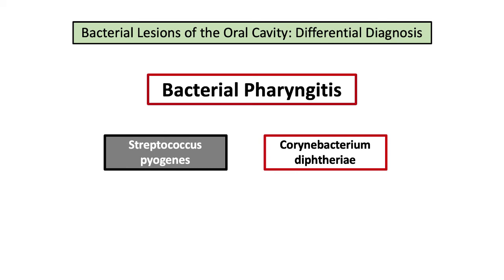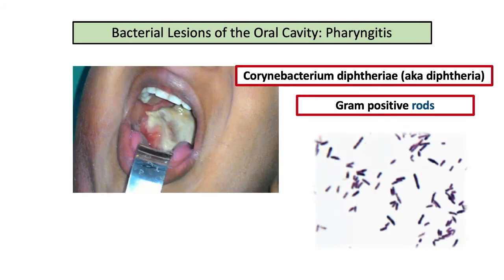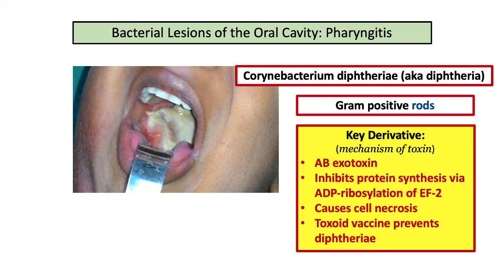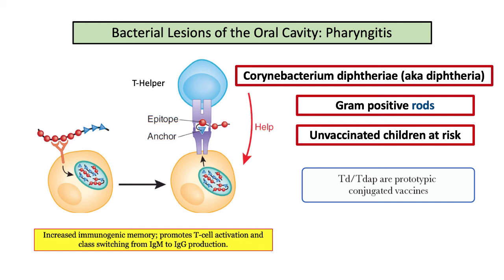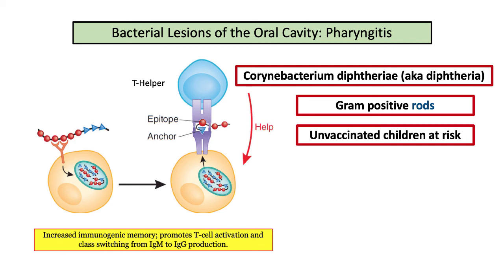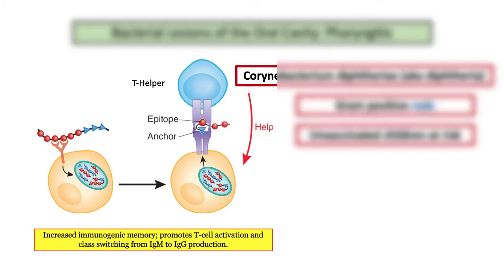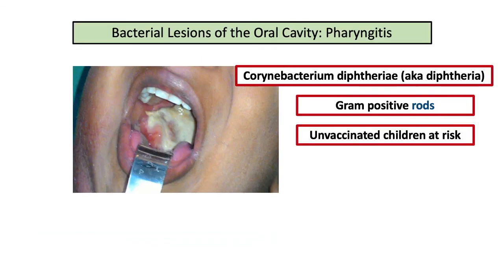Let's move on to another important board favorite, Corynebacterium diphtheriae. C. diphtheriae is a gram-positive rod that produces a toxin responsible for the majority of clinical manifestations. The key derivative for diphtheria is its exotoxin — an AB toxin that inhibits protein synthesis via ADP ribosylation of elongation factor 2. The net result is cell necrosis, manifested in the pharynx by the characteristic gray pseudomembrane. This is a vaccine-preventable disease, making it a target for test derivatives. The diphtheria vaccine, available as Td or Tdap, is the prototypic conjugated vaccine on Step 1. Conjugated vaccines emphasize the role of T helper cells in stimulating production of plasma cells as well as memory B cells, eliciting a stronger and more durable immune response.